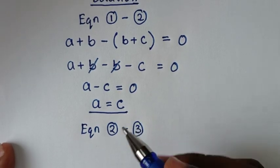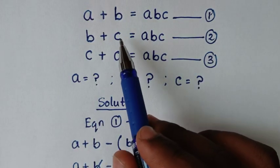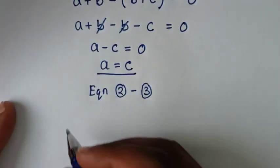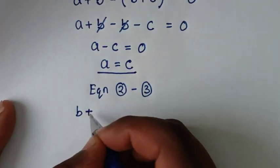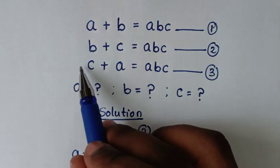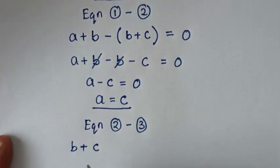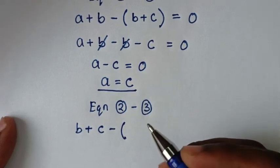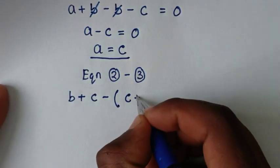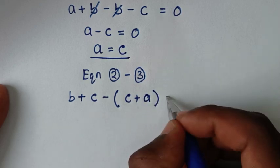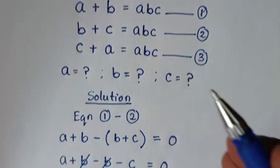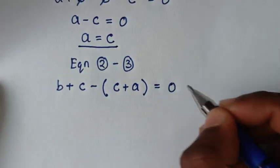From equation 2 on the left side it is b plus c, minus equation 3 which is c plus a. So it will be b plus c minus (c plus a), equal to abc minus abc on the right side, which is 0.